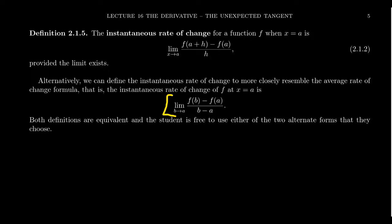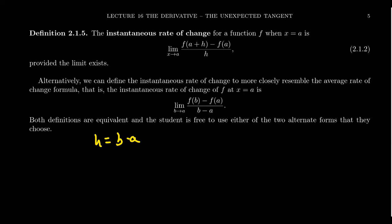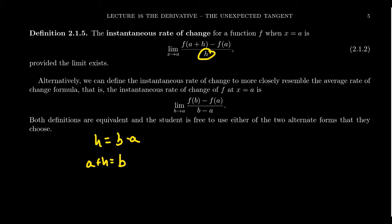Alternatively, we can define the instantaneous rate of change more closely resembling the average rate of change formula: the limit as b approaches a of [f(b) minus f(a)] over [b minus a]. These two definitions are exactly the same, because H is just the difference b minus a. If we add a to both sides, a + H equals b. From practice, having just H in the denominator is typically an easier algebraic form, but both give the instantaneous rate of change.